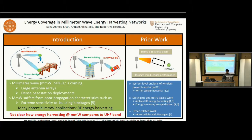However, millimeter wave suffers from poor propagation characteristics, such as extreme sensitivity to blockage due to buildings. Millimeter wave has many potential applications, one of which is wireless energy harvesting or wireless power transfer, where low-power sensors extract energy from incident millimeter wave signals.